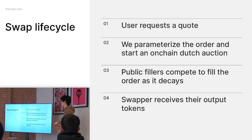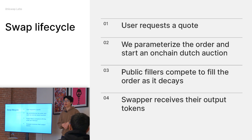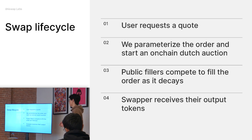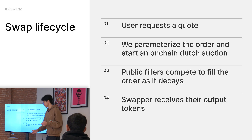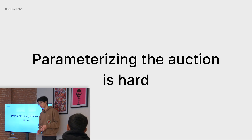Going through the actual swap lifecycle of Uniswap X: users still request quotes, we parametrize the order. At the core of the current version of Uniswap X, it's Dutch auction based. A Dutch auction starts at a higher level and goes down — the opposite of an English auction. The idea is that as the order decays over time on-chain, it becomes more profitable to fill. We have a public filler network that is competitive, and they try to fill the order before it decays past the bottom limit. At the end, the swapper receives their output tokens.